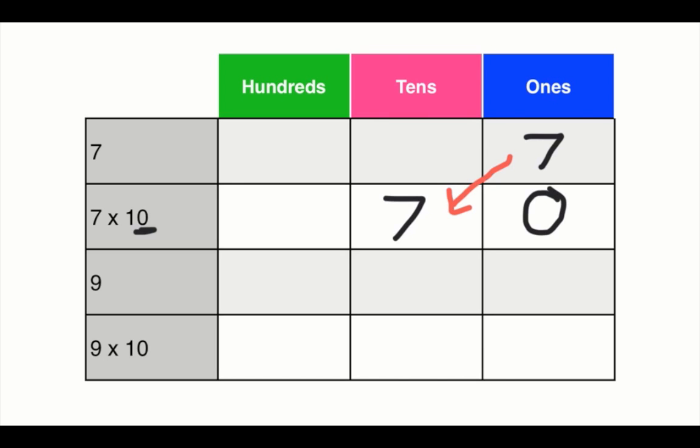Let's look at our next problem. The number that we're multiplying is 9. Go ahead and put 9 in your ones column. Now when we multiply by 10, we move over one column in the place value chart, putting the 9 into the tens column. The 0 from the 10 then moves into the ones column, giving us the solution of 90.